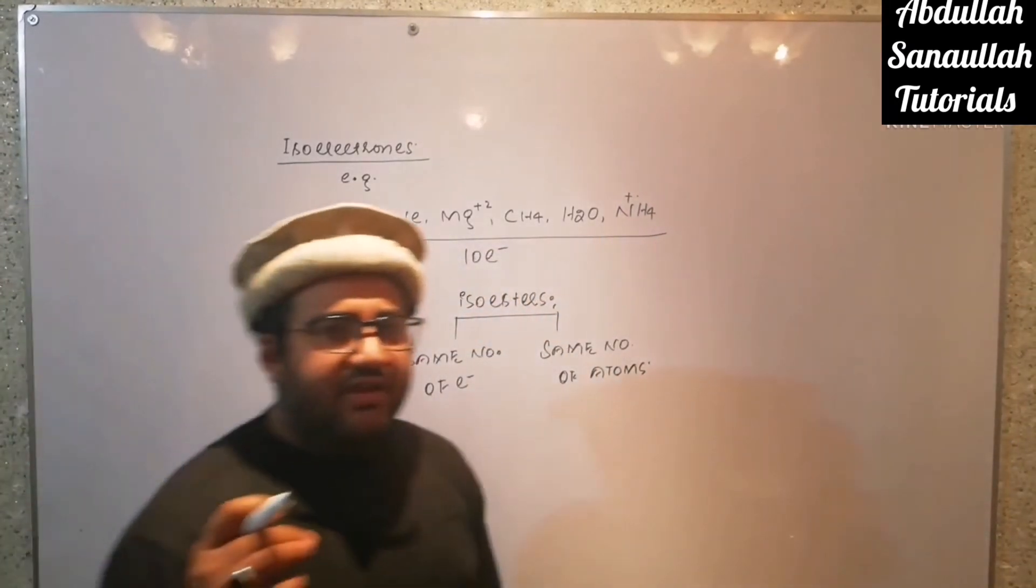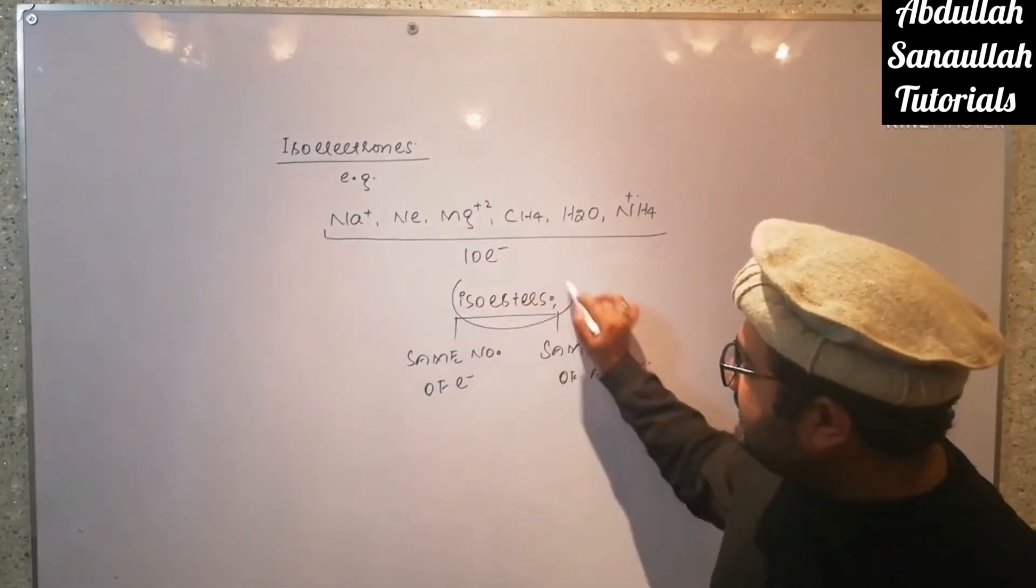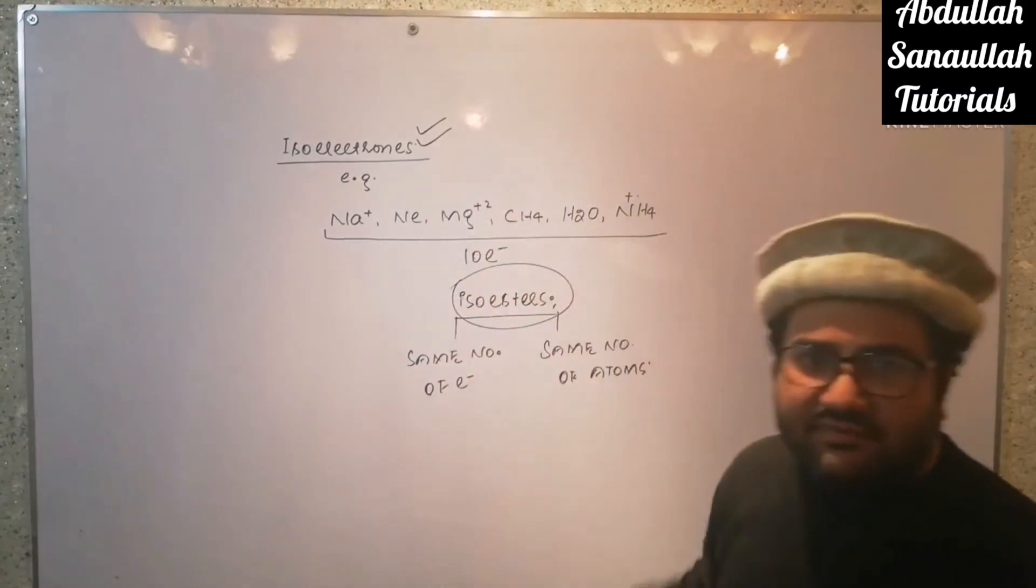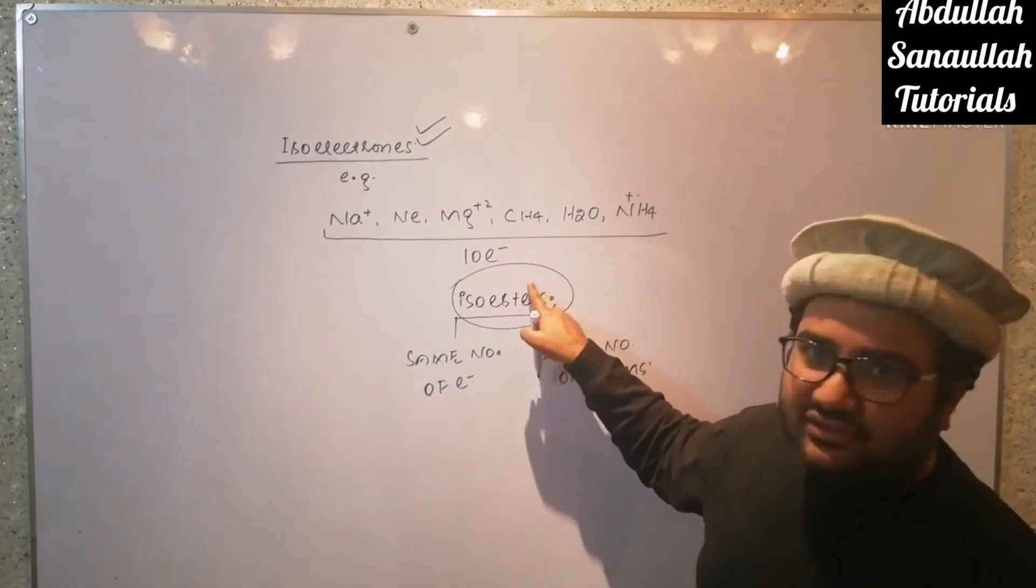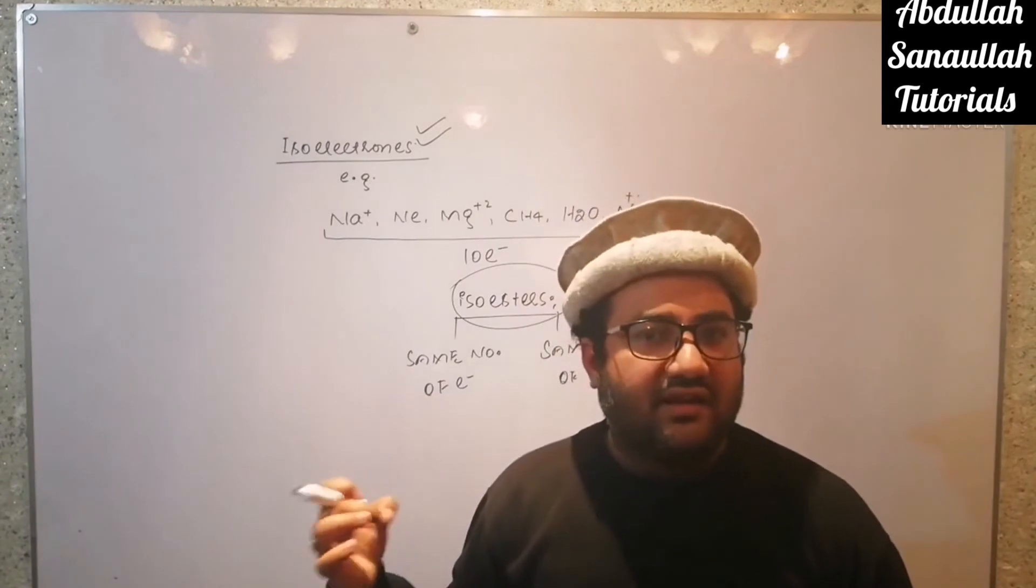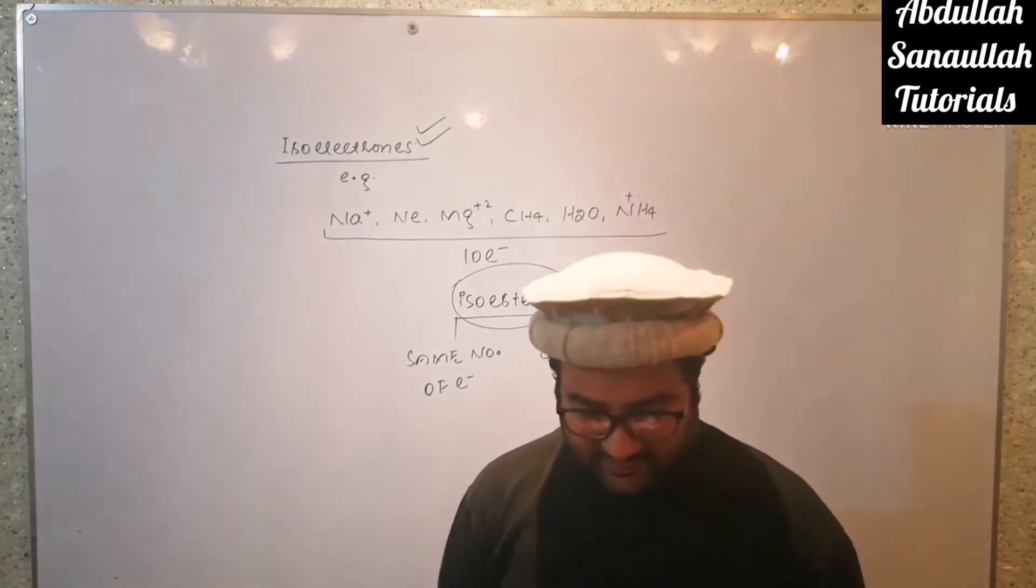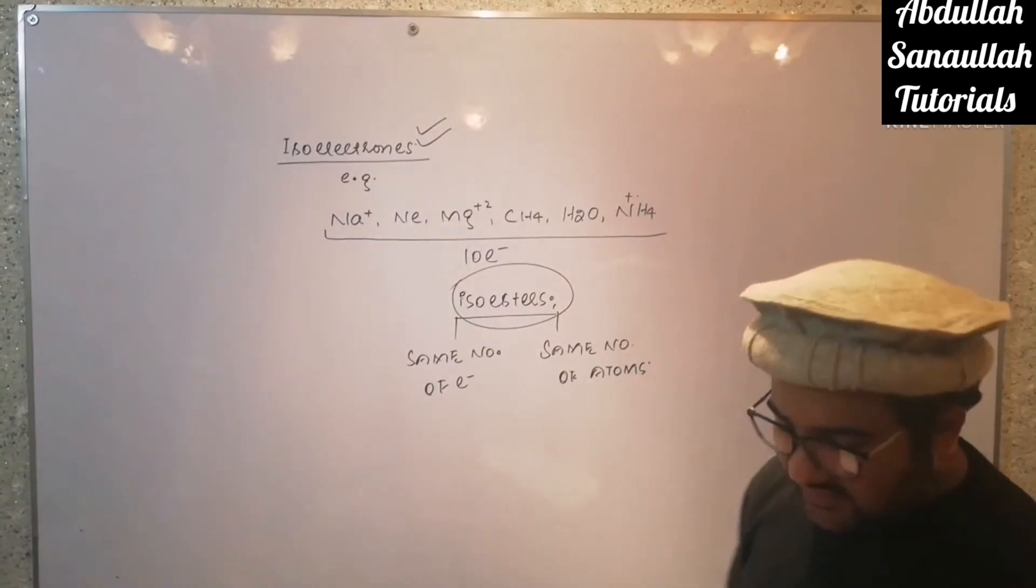Listen to my sentence very carefully: all isoesters are isoelectrons because they have the same number of electrons, but all isoelectrons are not isoesters because there is another condition for being an isoester—there must be equal number of atoms. Now let us discuss some examples of the isoesters.